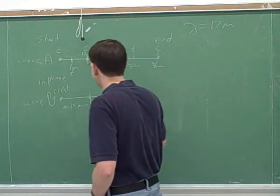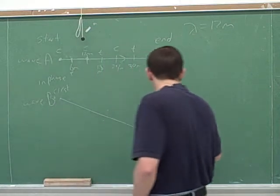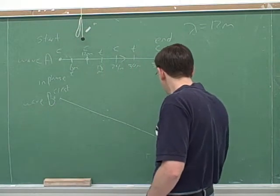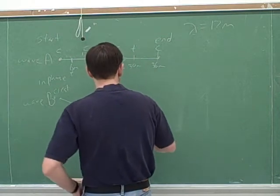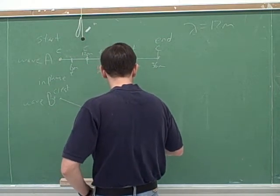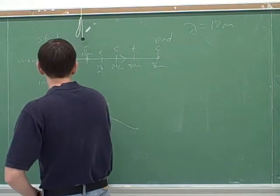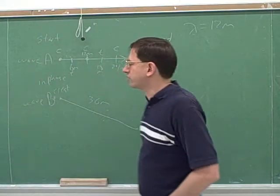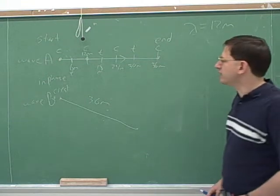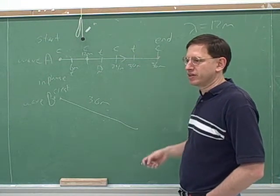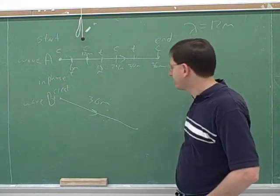Let's take wave B. Both wave A and wave B started at a crest. But now they're not moving parallel to each other anymore — you can see that the two waves are not moving parallel. I'm not drawing the wave, I'm just drawing the path.